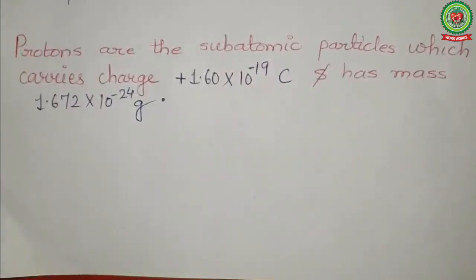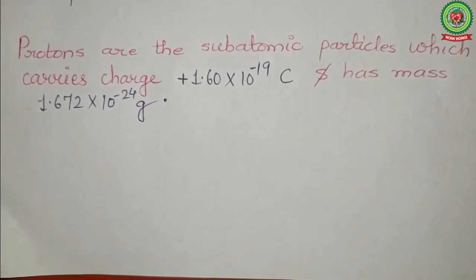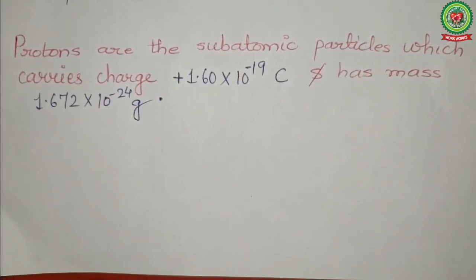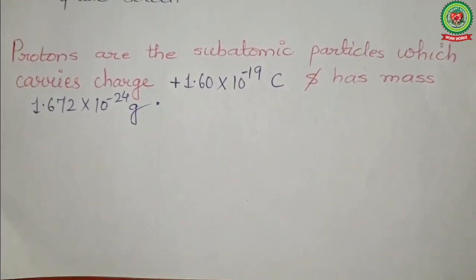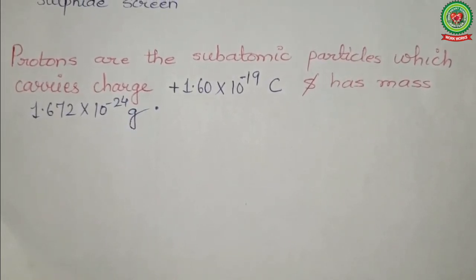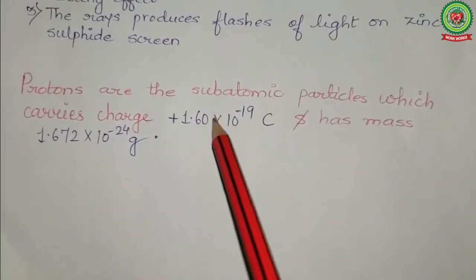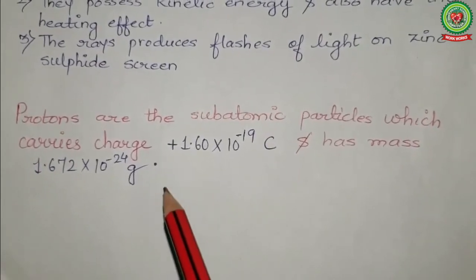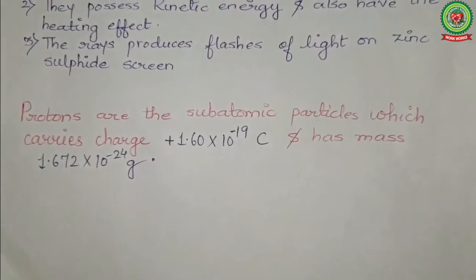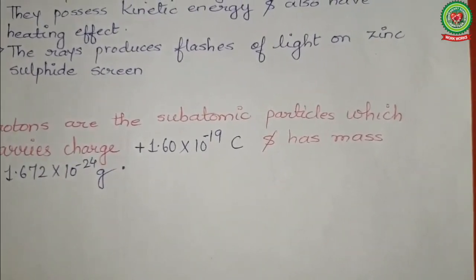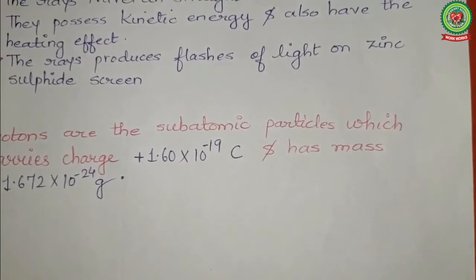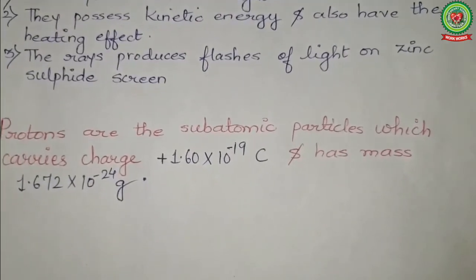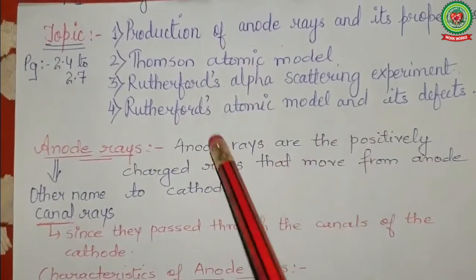The positively charged particle was discovered by Goldstein and was known as proton. Protons are subatomic particles that carry a charge of +1.60 × 10⁻¹⁹ coulombs and have a mass of 1.672 × 10⁻²⁴ grams. Protons are the positively charged particles that reside inside the nucleus of an atom.